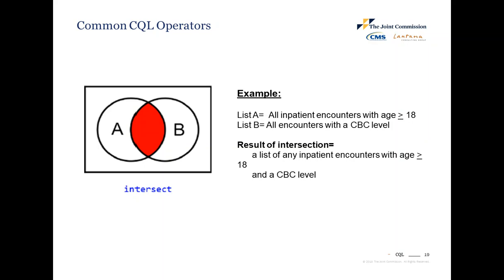Intersect is another common operator in CQL, which is only looking for the common elements between list A and list B. For example, if list A returns all inpatient encounters with age 18 years and older and list B returns all encounters with a CBC level, then the result of the intersection is a list of all inpatient encounters with age 18 years and older and a CBC level. That takes us to the end of the CQL basics.